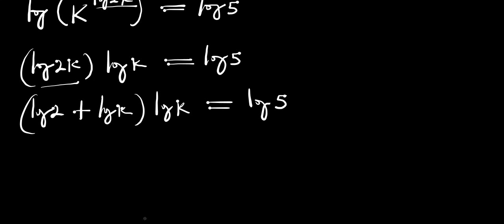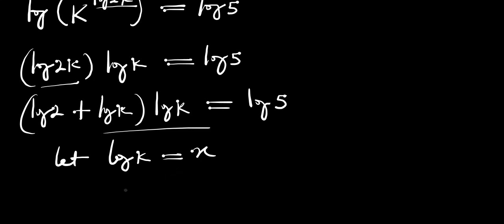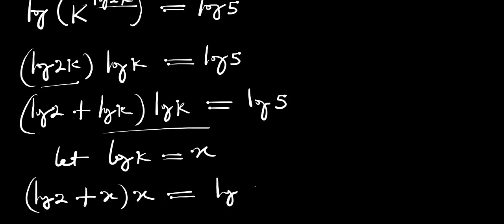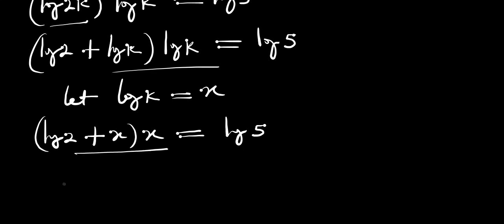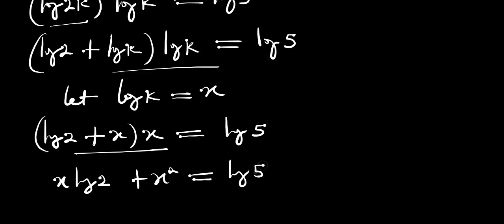The next thing we are going to do is let log of k equal x, to reduce this equation. If we expand the bracket we are going to have x·log of 2 plus x squared equals log of 5.